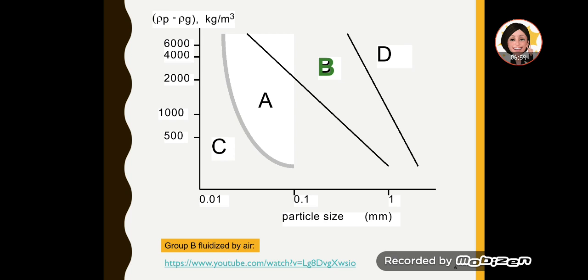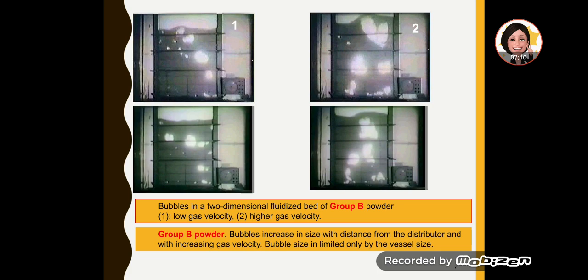There's also a video for group B which you can watch in the YouTube link that I have given below. This is what you will watch for group B bubbles powders. If you notice the bubbles on the first pictures, this one is at low gas velocity, so you have reasonably sized bubbles.